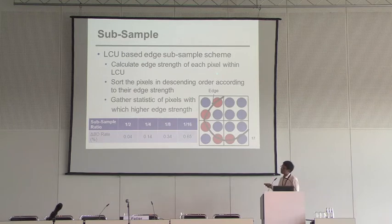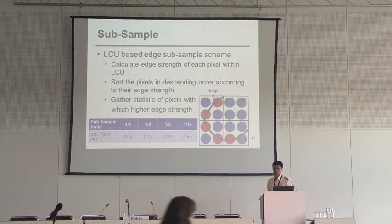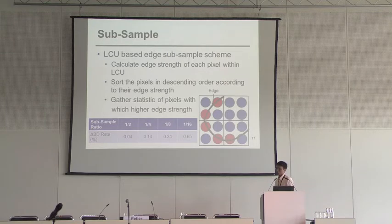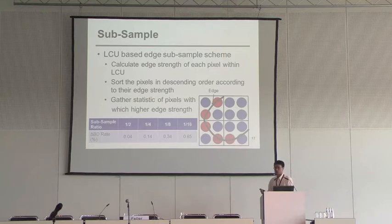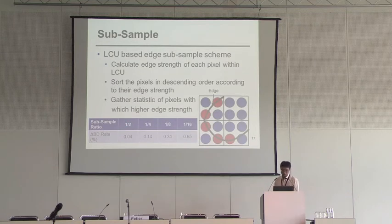Here is the LCU-based edge sub-sampling scheme. First, we calculate the edge strength of each pixel within an LCU and then sort the pixels in descending order according to their edge strength. Then we gather statistics of pixels which have higher edge strength. In the picture, the black line is the threshold. The red pixels are those which have higher edge strength, so we choose these red pixels to gather statistical information and do auto and cross-correlation, while we do nothing for the rest of the blue pixels. The table shows that for a half sub-sampling ratio, the BD-rate increase is only 0.04%.